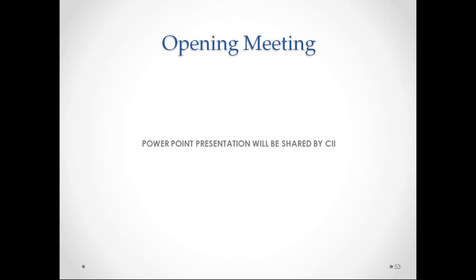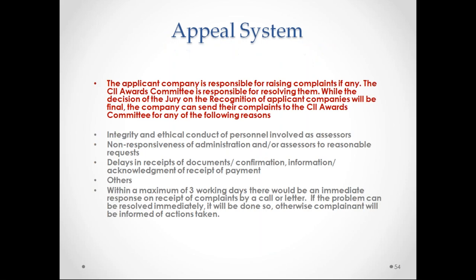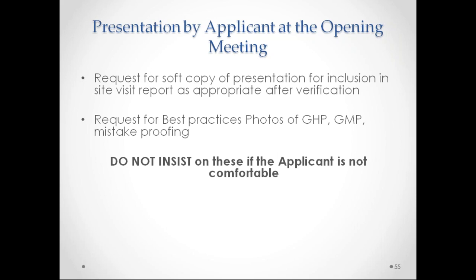For the opening meeting, we will share a PowerPoint presentation with you — the updated version, as we have done for the last three years. There is an appeal system which the senior assessor must make clear during the opening meeting: the applicant company can raise any complaints to the CII awards committee for resolution. The jury's decision on recognition is final, but the company can contact CII's awards committee. You can also ask the applicant to share a soft copy of their opening presentation — preferably editable — and tell them they can share best practice photos for the jury presentation if shortlisted. But if they are not comfortable, please do not insist.